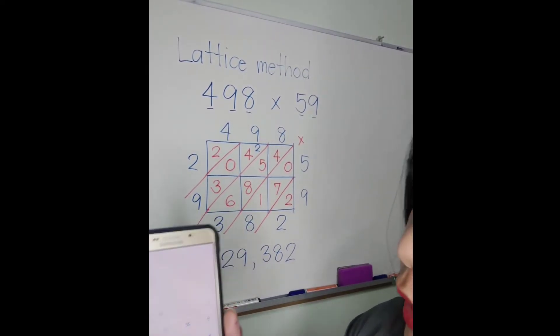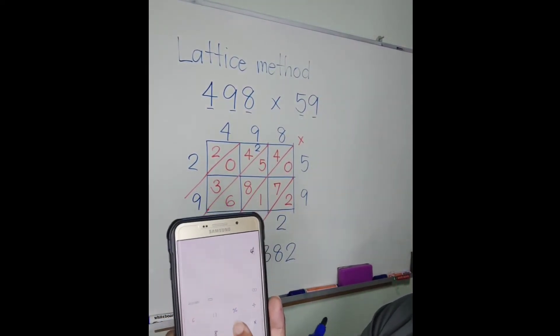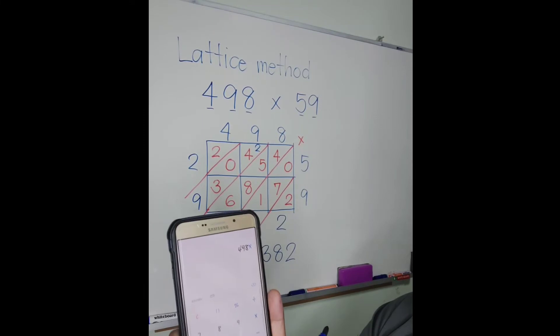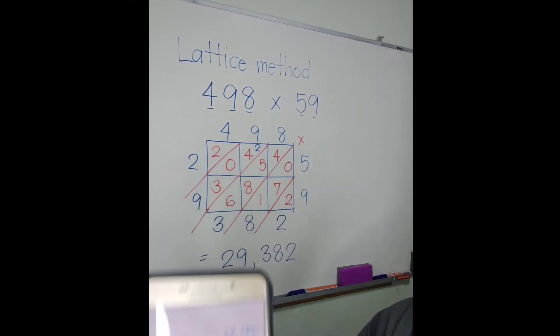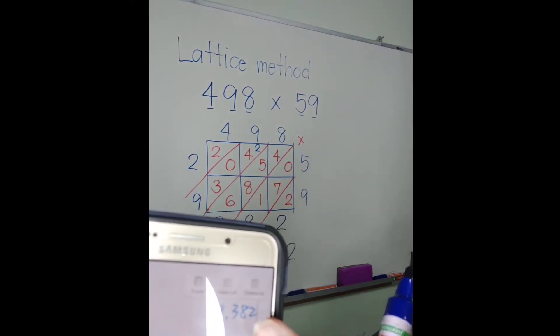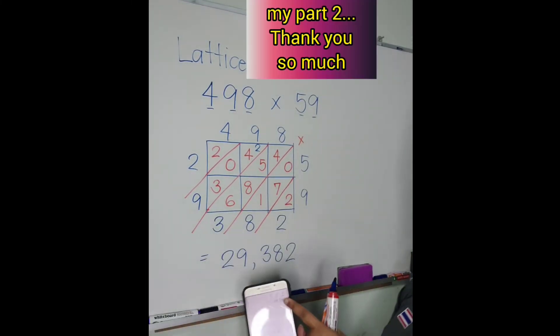Let's check the answer! Okay, so we have 498 times 59. The answer is 29,382. Wow, very good, excellent!